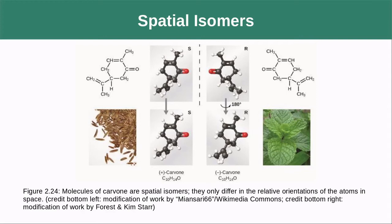Even though this is a subtle difference, it can lead to substantial differences in properties. A lot of medicines have these properties — sometimes one form is medicinal and the other is not. A famous example is thalidomide, which had both an S form and an R form. The S form helped pregnant women avoid morning sickness, but when distributed to save costs, the R form was left in as well, and it turned out the R form caused birth defects. It's very important to recognize these differences and be careful with any product you use.